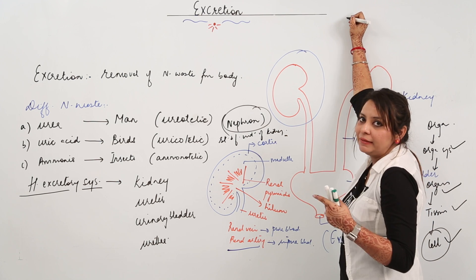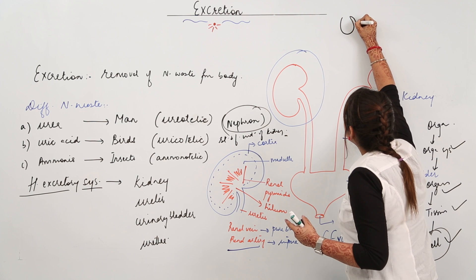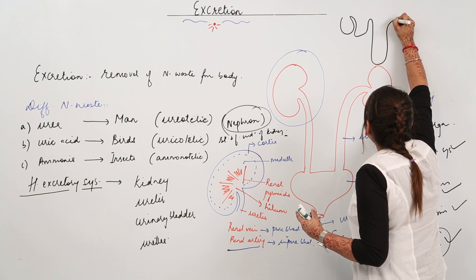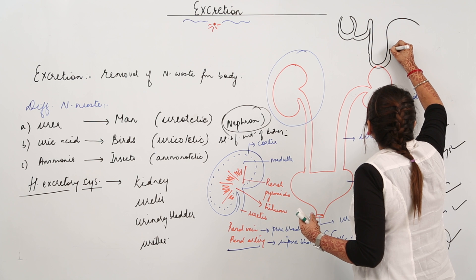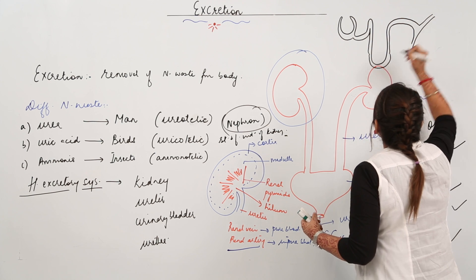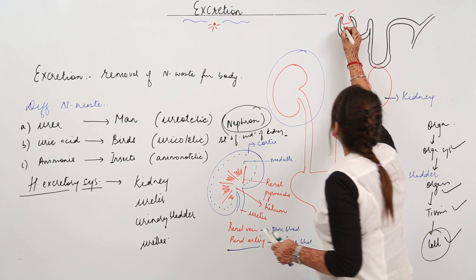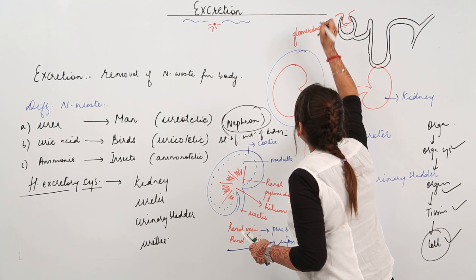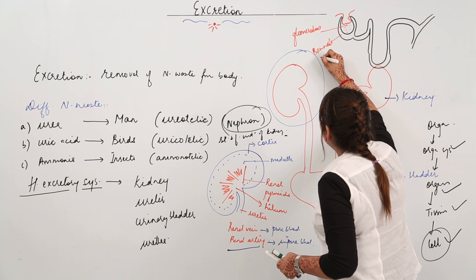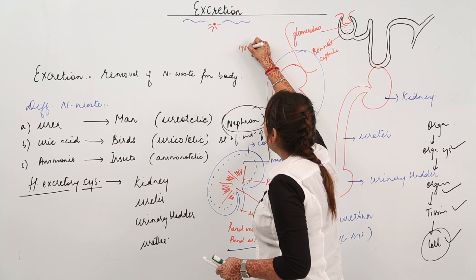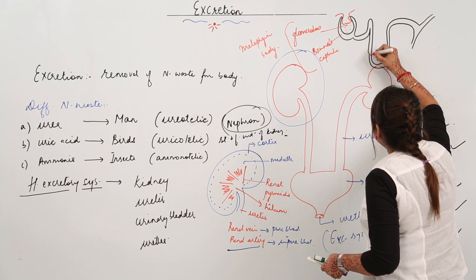Now let's look at the structure of the nephron — I'll draw it on the board. Form a U-shape structure, with a descending limb and an ascending limb. The nephron contains a tuft of capillaries called the glomerulus. This U-shaped structure surrounding it is called Bowman's capsule. Together, the glomerulus and Bowman's capsule are called the Malpighian body. The tubule starting from here is called the PCT — proximal convoluted tubule.